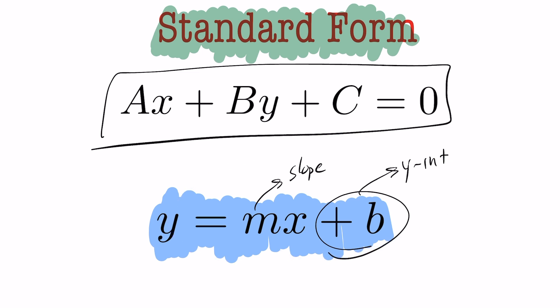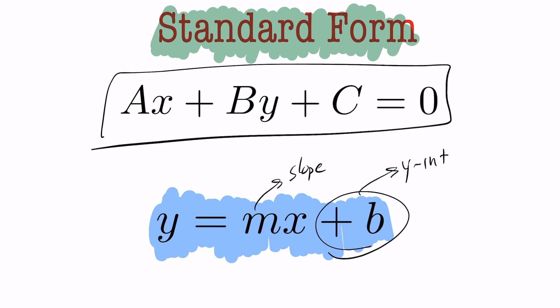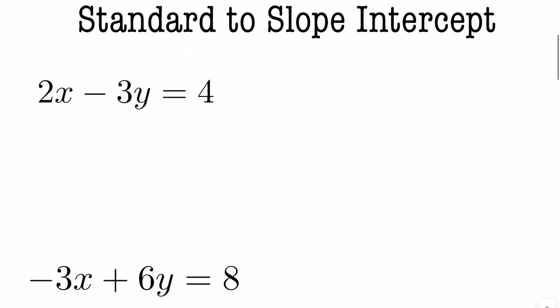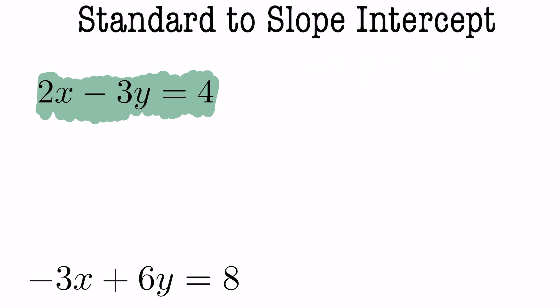We're going to look at how, if given a linear equation in standard form, we transfer and re-express that in slope-intercept form so we can grab the slope and y-intercept from the equation. For our first example, this is in standard form or close to standard form. The constant term is on the other side of the equation. In exactly standard form, you'd have 2x minus 3y minus 4 equals 0. We want to express this in slope-intercept form.